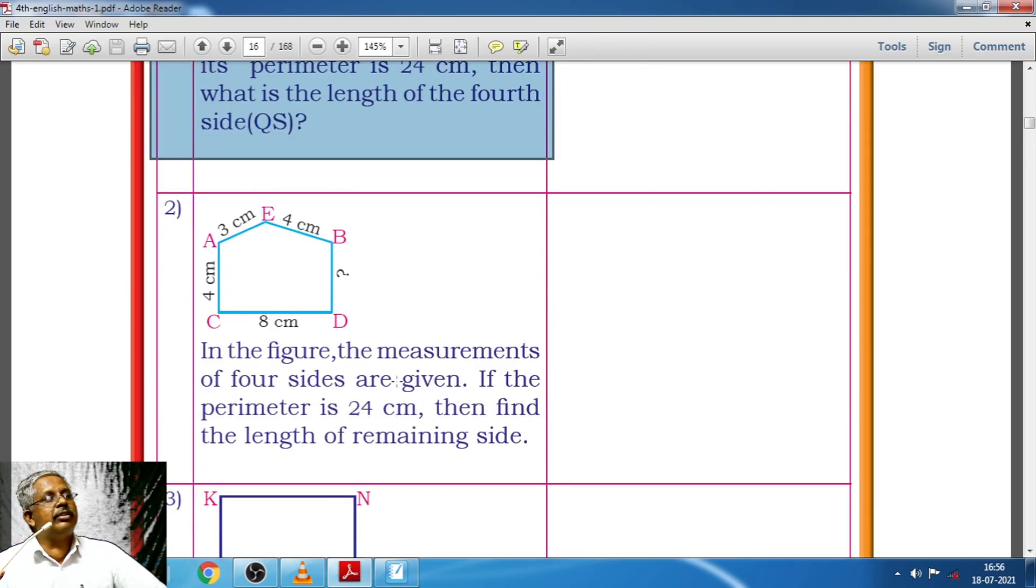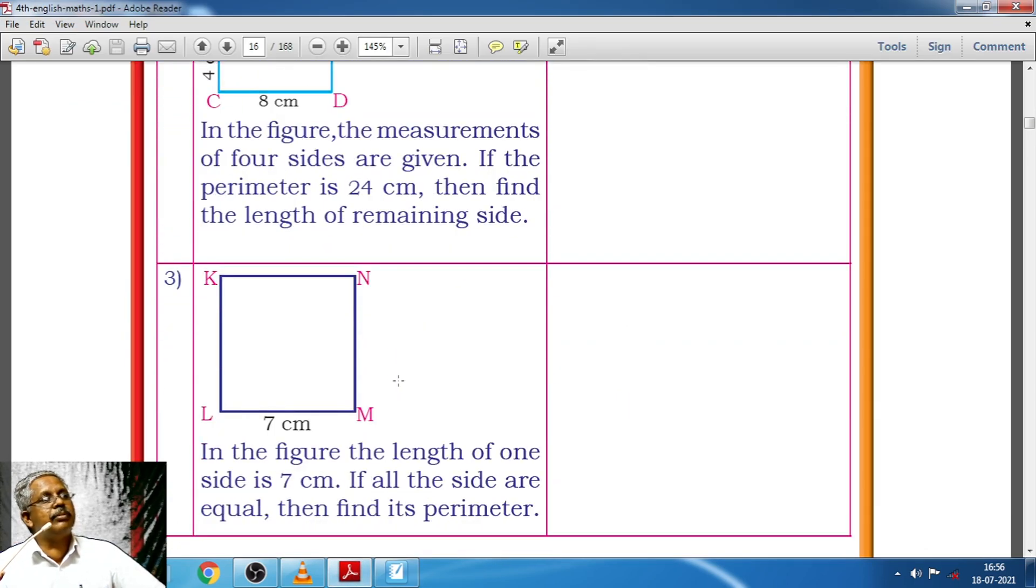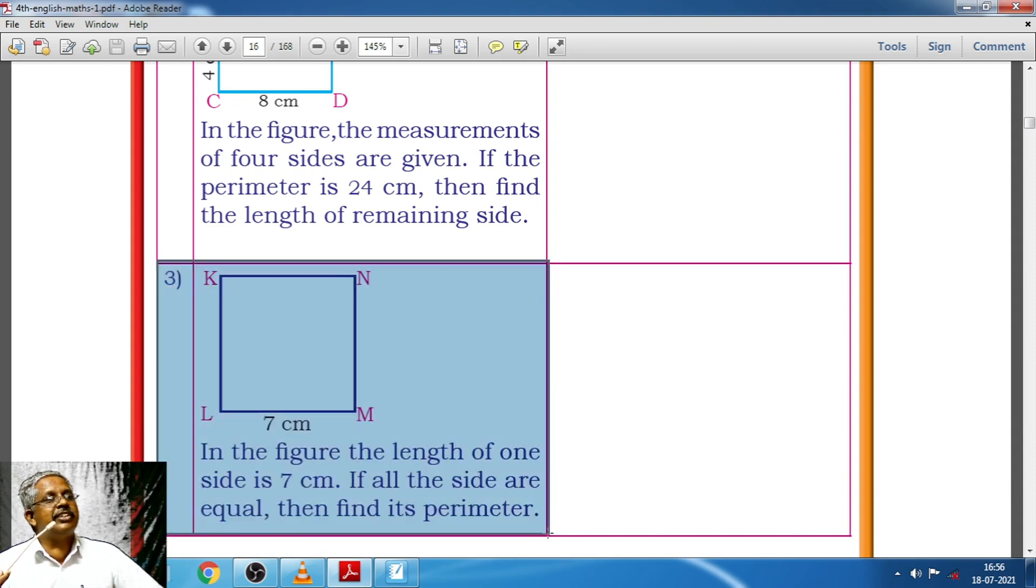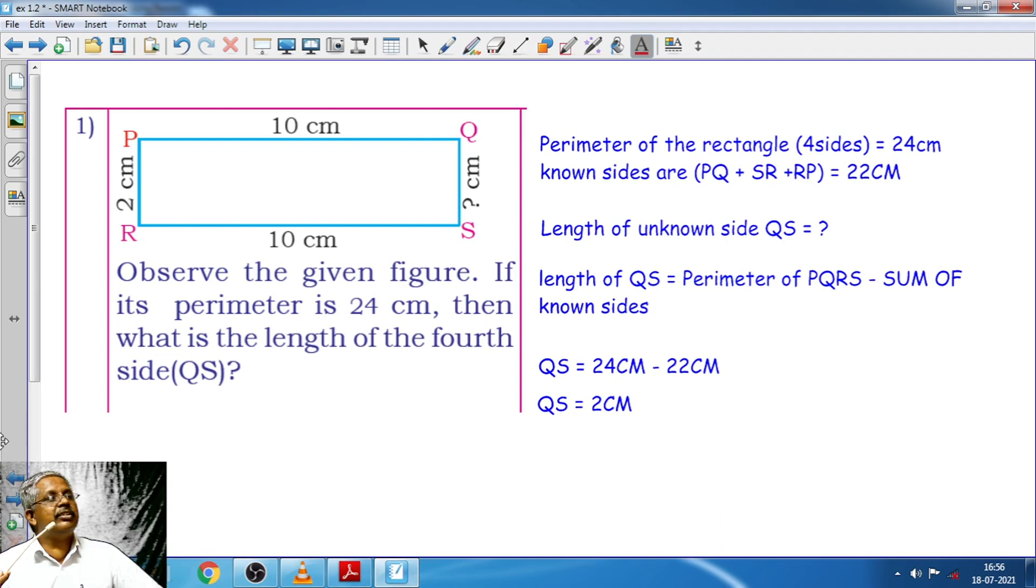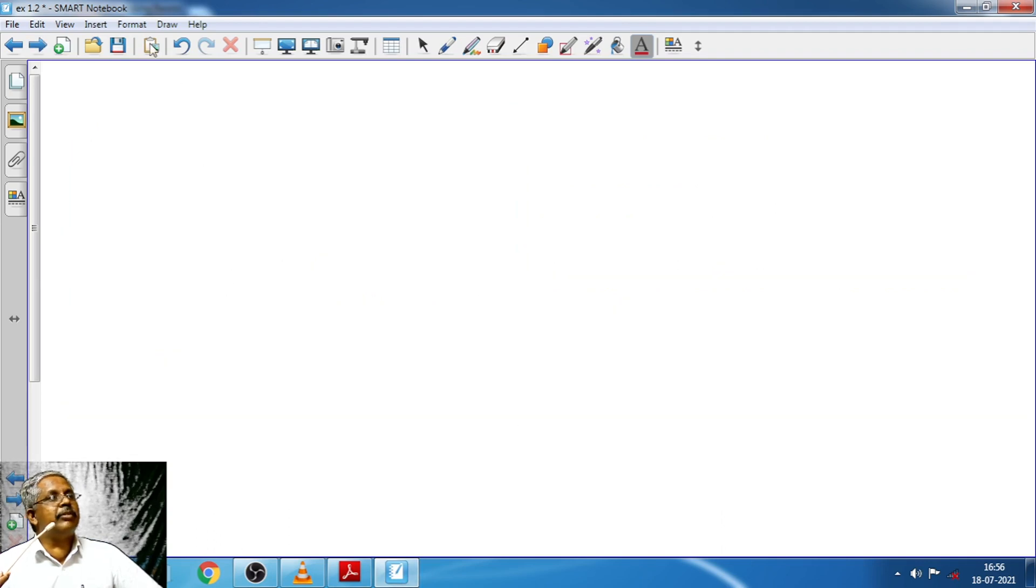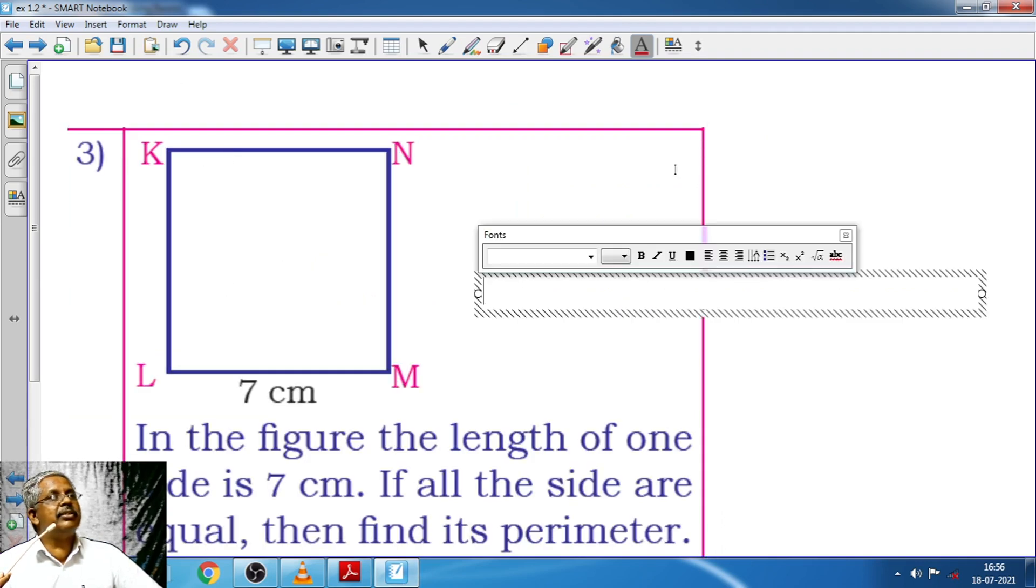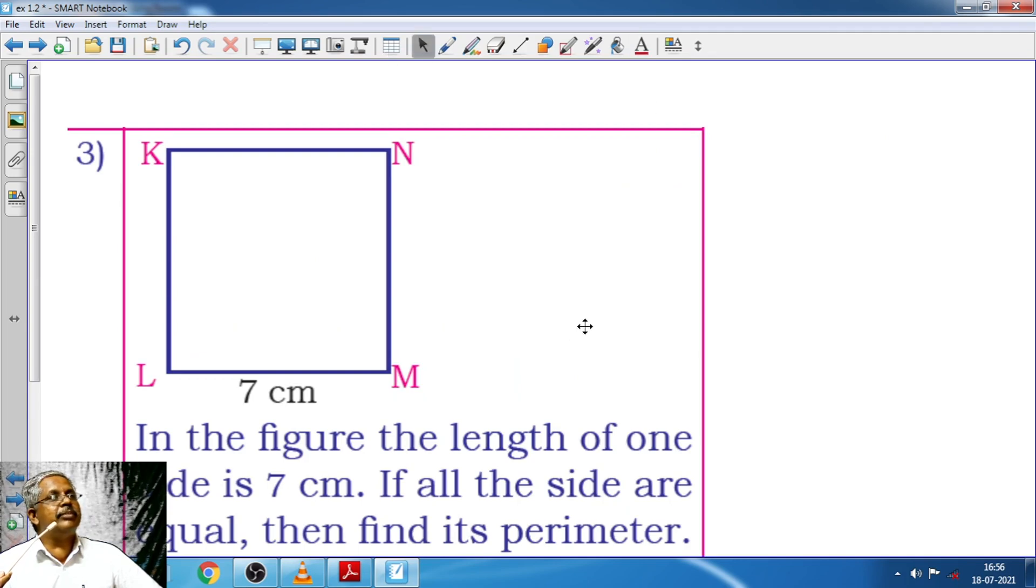Let me try for one more sum over here. In this figure the length of one side is 7 cm. If all the sides are equal then find its perimeter. Let me do this one as an example. So I will take this. I am going to place this here.